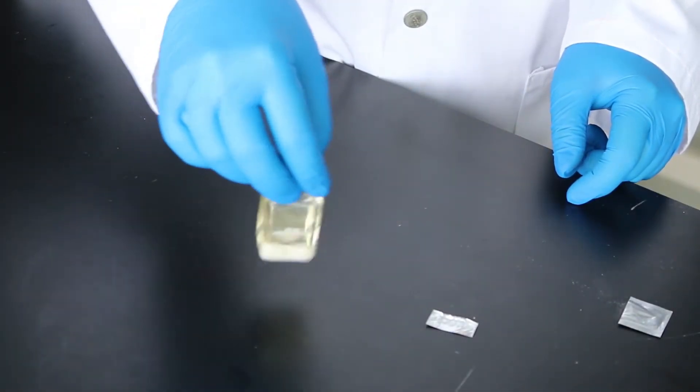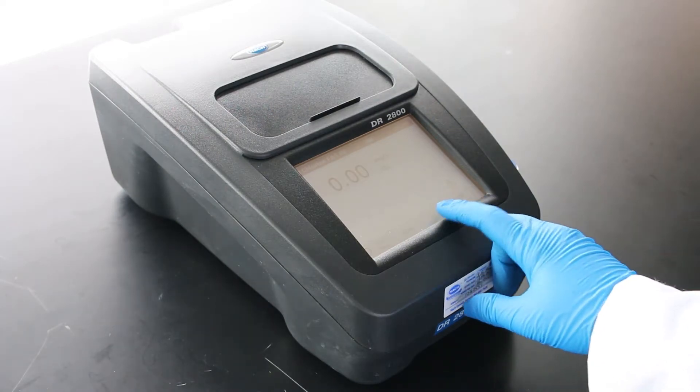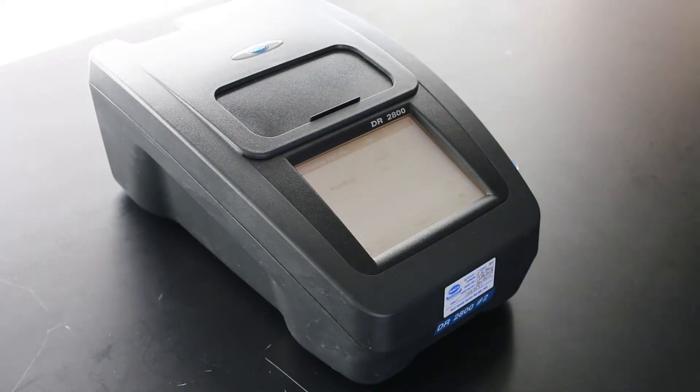If the sample is over range, it must be diluted and the test must be repeated or another method may be available to measure the sample without dilution.